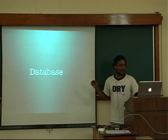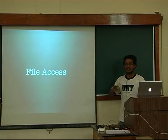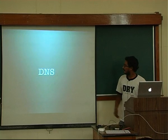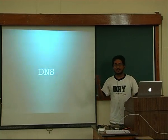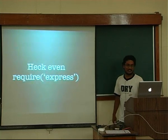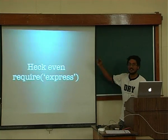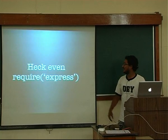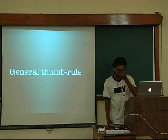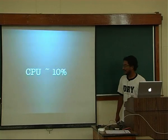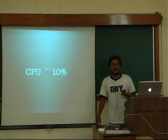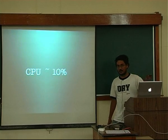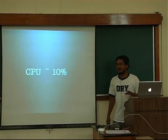IO is everything: talking to the database, file access. Every time you talk to MySQL, it's IO. Every time you're reading a config file, it's file IO. DNS lookup, your name-to-host IP resolution — even require express is blocking. There's a require-async which does that. But the general rule of thumb — this is not some random statistic I made up, this is reality. There are lots of papers that talk about what CPU gets actually utilized.